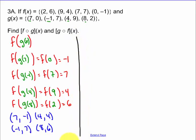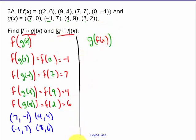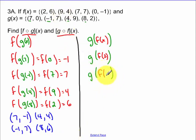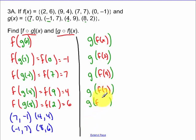Now when we're finding g of f of x, it's the same thing. What I often find is students give me both answers on the test — I'm only going to ask for one of these two, so make sure you know which one I'm asking for. So I'm finding g of f of 2, g of f of 9, g of f of 7, and g of f of 0. Now I start with the x values in my f of x function.